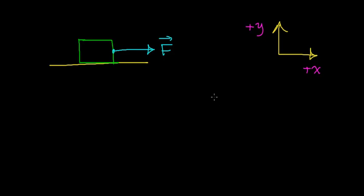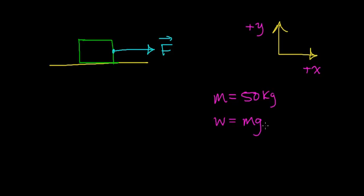We need to know a few things. We need to know the mass of this object. In this case, let's say that we're working with a box with a mass of 50 kilograms. The weight of an object with a mass of 50 kilograms will work out to be the mass times the gravitational acceleration, which should work out to be 490 newtons, or about 110 pounds.